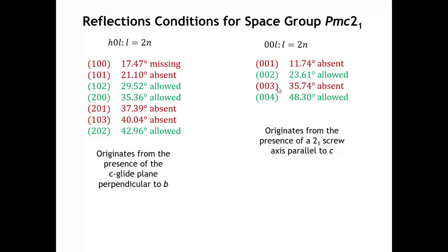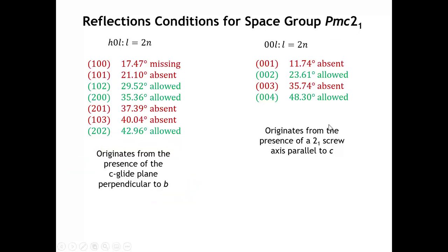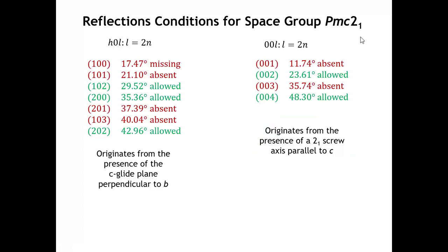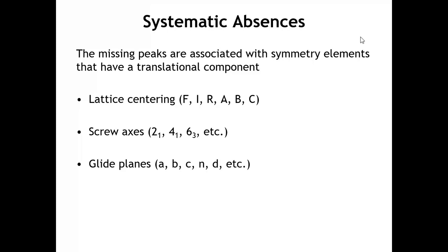What's causing these peaks to be missing? It turns out they're associated with certain elements of symmetry. The H0L peaks that are missing in this space group are missing because there's a C glide plane perpendicular to B — PMC 2₁. And the 00L peaks that are missing are missing because there's a 2₁ screw axis parallel to C. So we might ask: do all symmetry elements lead to some missing reflections, and can we work out which symmetry elements are present by analyzing the missing reflections?